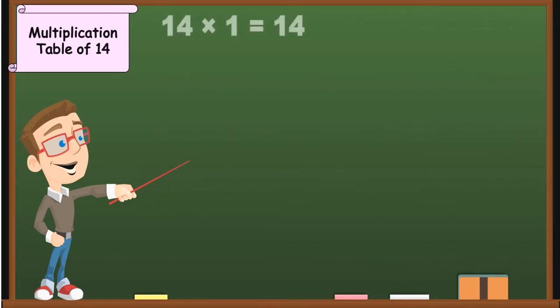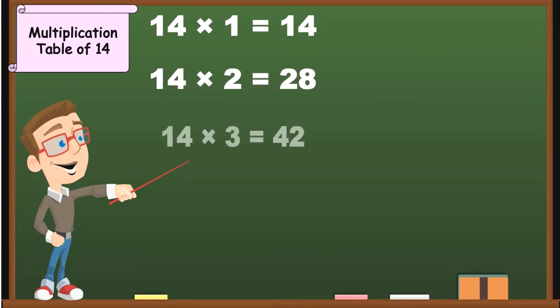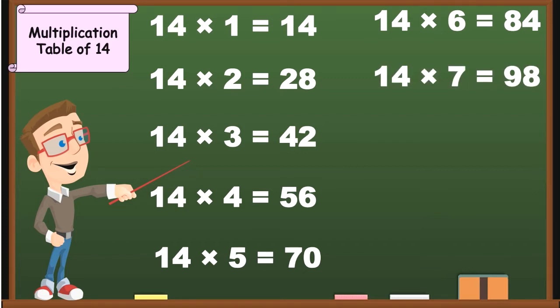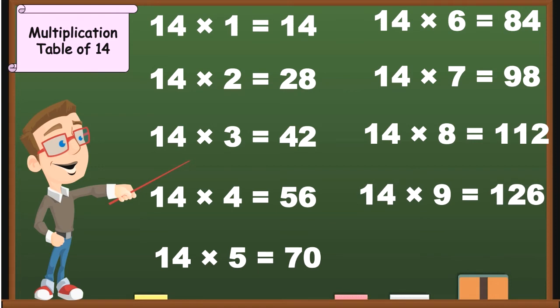14 1's are 14, 14 2's are 28, 14 3's are 42, 14 4's are 56, 14 5's are 70, 14 6's are 84, 14 7's are 98, 14 8's are 112, 14 9's are 126, 14 10's are 140.